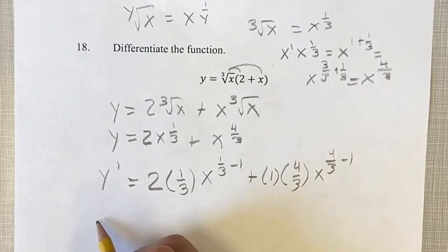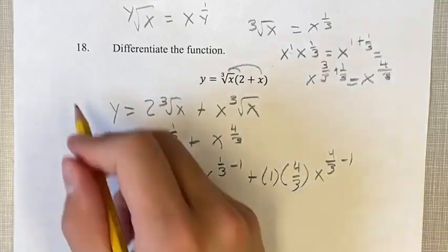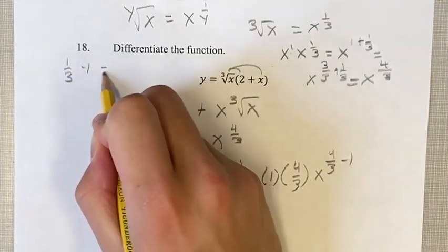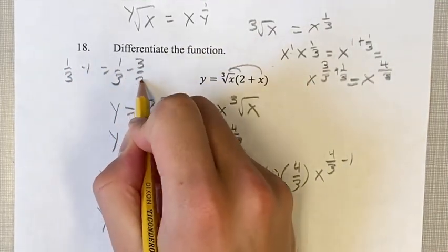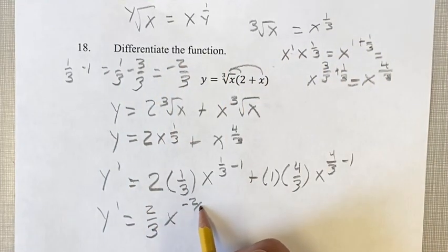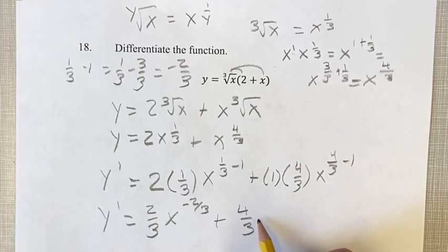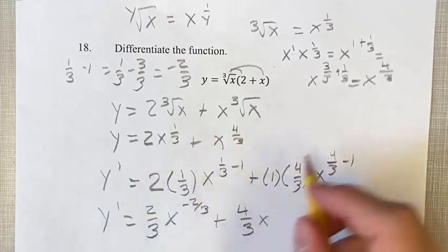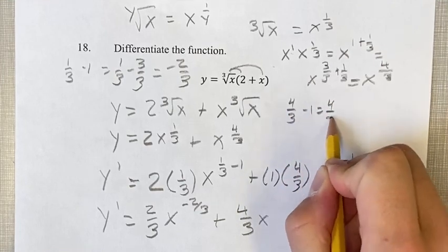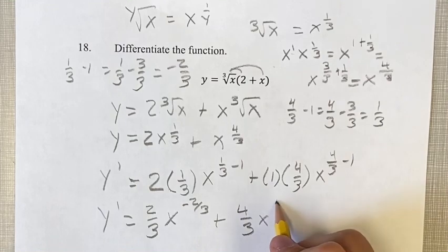Now this is something we can simplify. 2 times 1 third is 2 thirds, times x to the 1 third minus 1 is 1 third minus 3 thirds, is negative 2 thirds. 2 thirds x to the negative 2 thirds, plus 4 thirds x to the 4 thirds minus 1 is 4 thirds minus 3 thirds, is 1 third x to the 1 third.